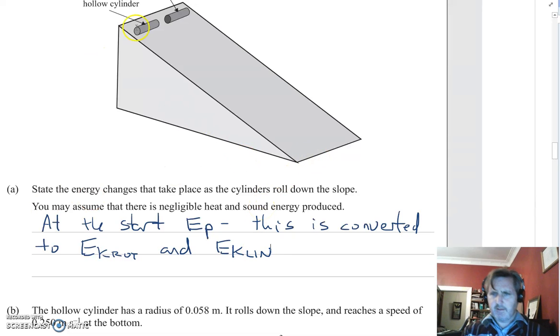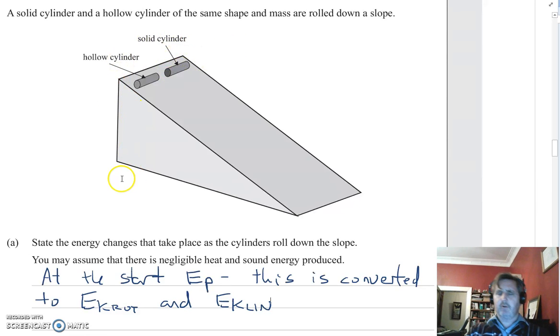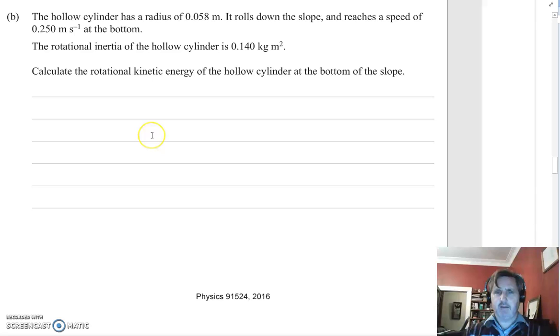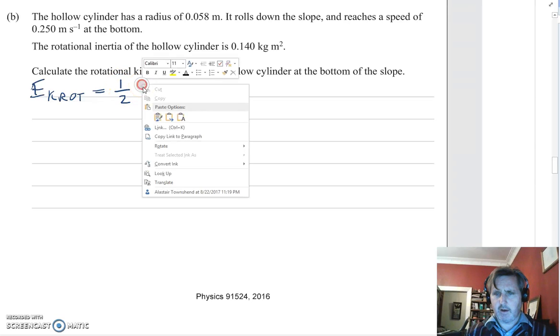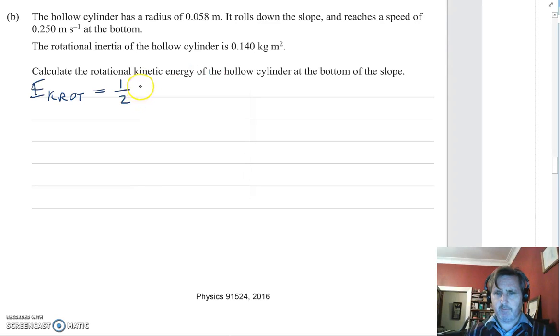Now we look closer at the cylinders, we see one is solid and one is hollow. So I'm automatically thinking they're going to ask me something about inertia here. The hollow cylinder has a radius of 0.058 m, it rolls down the slope and reaches a speed of 0.250 meters per second. The rotational inertia is 0.140 kilogram meters squared. Calculate the rotational kinetic energy. I look up my equations and find that the kinetic energy rotational equals half I omega squared.